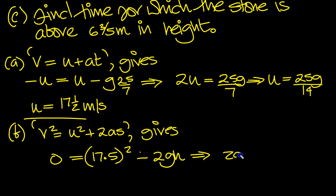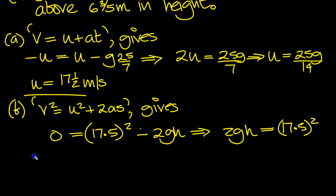So let's put in the height. s is h, so that tells us that 2gh then. Move this across to plus, it's 17.5 squared. And that tells us the height then. So h is equal to 17.5 squared, and move the 2g from times down to divide.